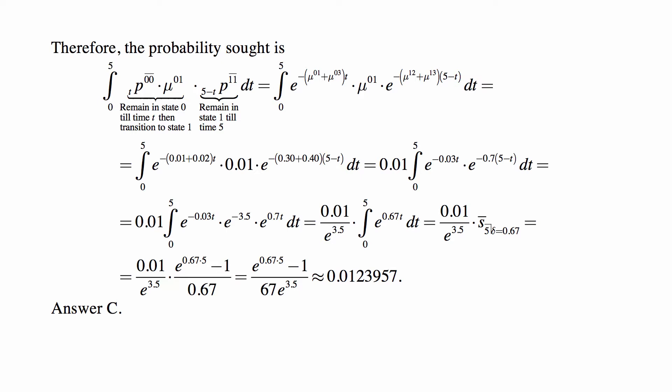Okay, now we plug in all the numbers, and mu01 is constant. That force is constant, it's 0.01. That's a constant, we just put it in front of the integral. And otherwise, we have e to the minus 0.03t times e to the minus 0.7 times 5 minus t. So we do a little bit of algebra, we combine the like terms.